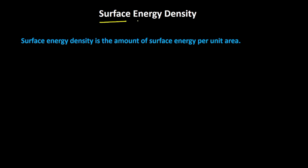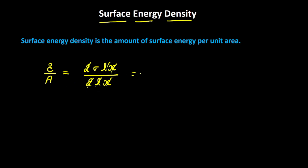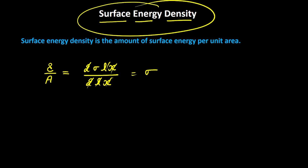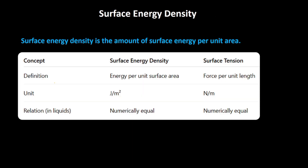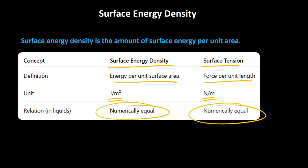Now we can define another quantity called surface energy density. Surface energy density is nothing but energy divided by surface area. In our case, the surface energy is 2 sigma L x and the increase in surface area is 2 L x. Cancelling these out, we are left with only sigma. So the surface energy density is actually equal to the surface tension. Surface energy density is defined as the amount of surface energy per unit area, measured in joules per meter squared. Surface tension, sigma, is defined as force per unit length, measured in newtons per meter. Both are numerically equal.